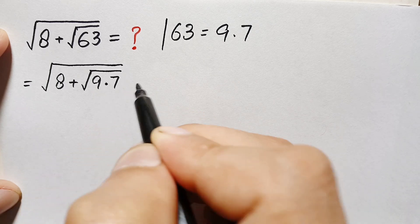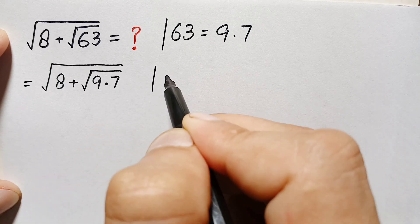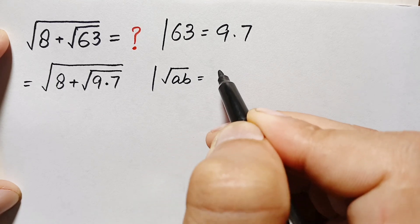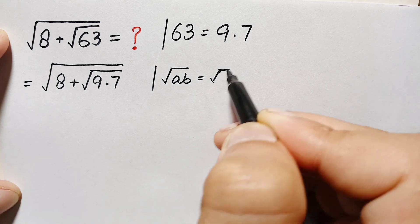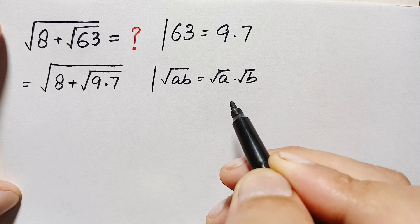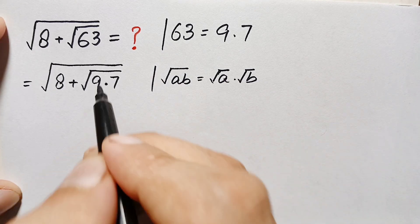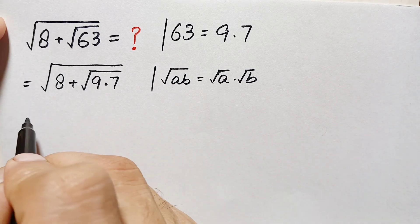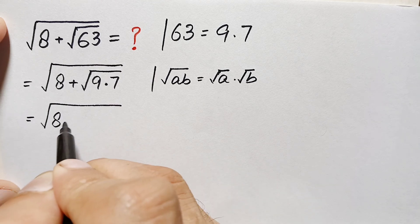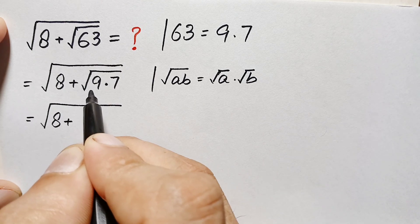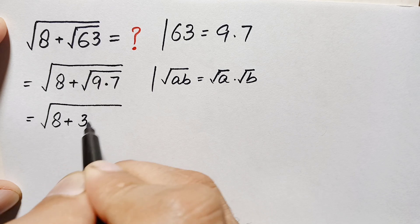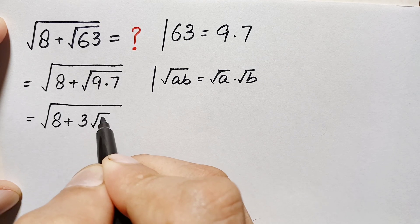We know that the square root of a times b equals the square root of the first number times the square root of the second number. Using this result, we can write this as the whole square root of 8 plus square root of 9 times square root of 7, and since square root of 9 is 3, this becomes the whole square root of 8 plus 3 times square root of 7.